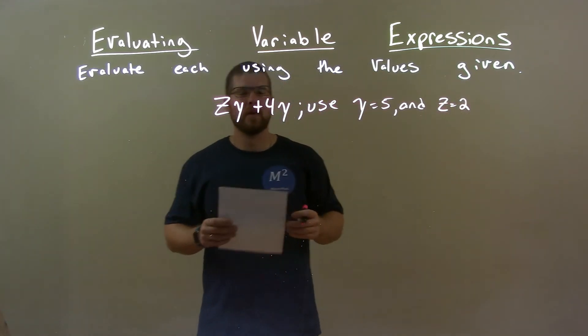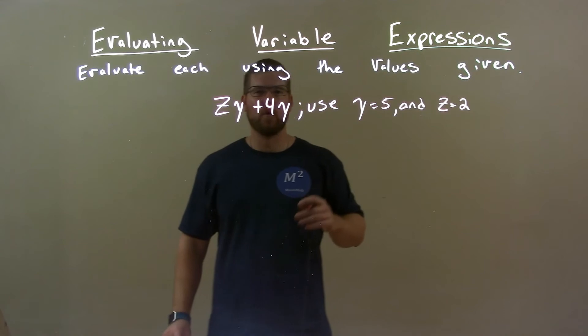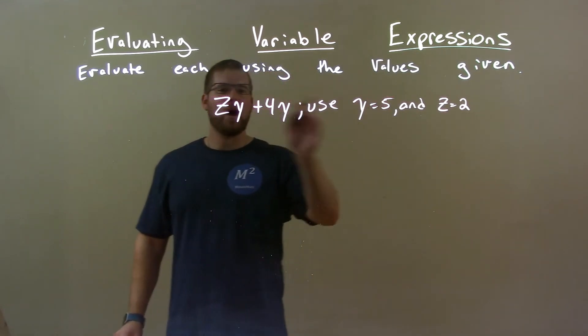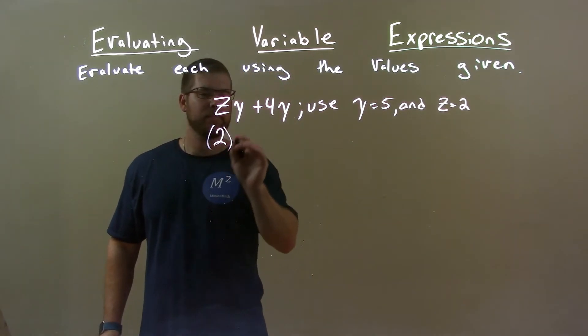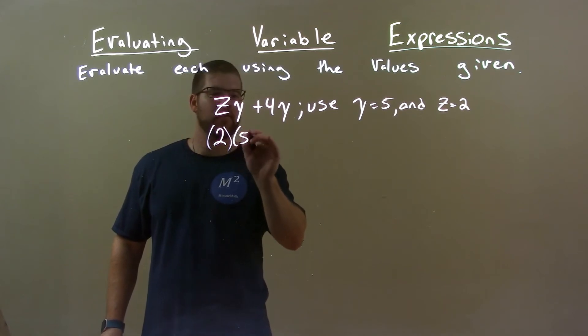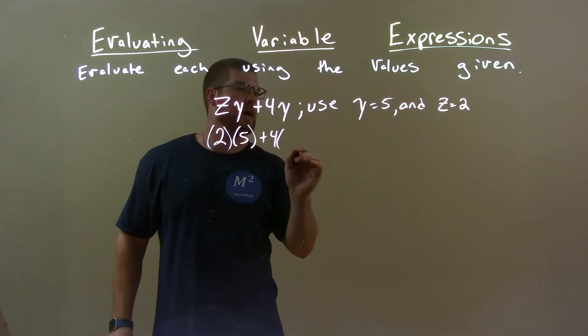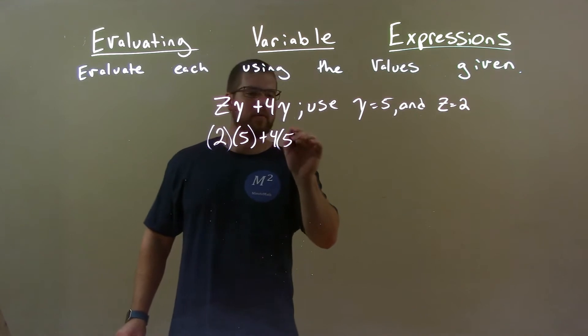All right, so first thing, substitute our variable with our corresponding numbers. 5 for y, z for 2. So we have 2 here, then y is 5 plus 4 times y which is 5.